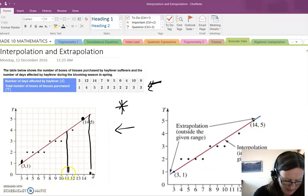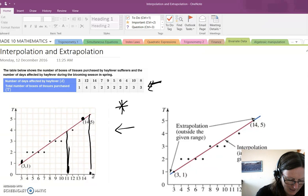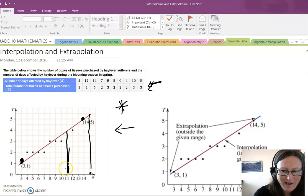So just recapping, if we're asked to make a prediction for 11 days, how many boxes of tissues, this is interpolation. Interpolation is the term used for predicting a value of a variable within the range of the given data. So within the range, from the lowest to the highest value, 11 falls within that range, so it's interpolation.